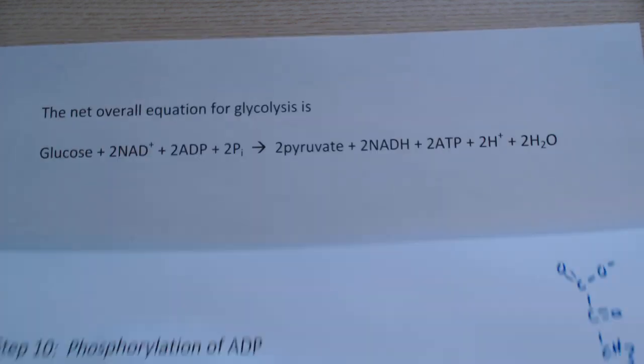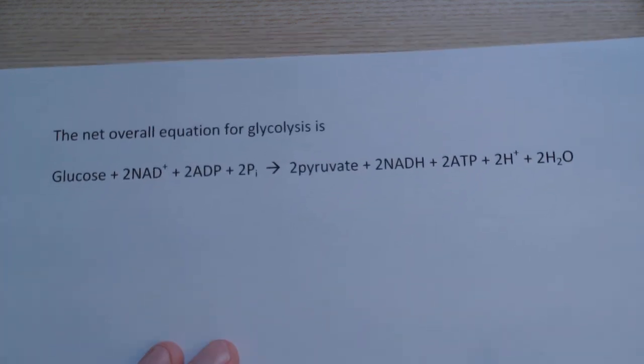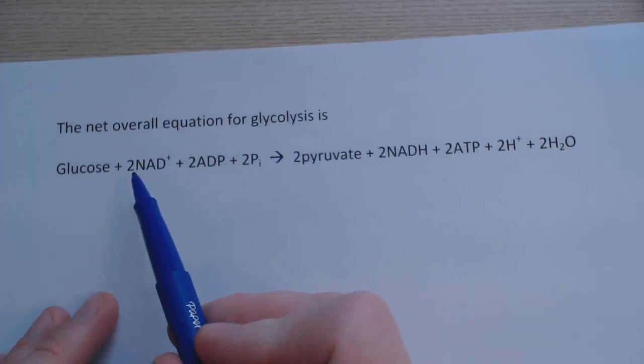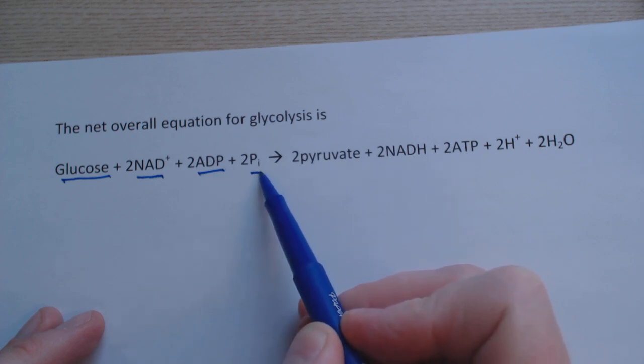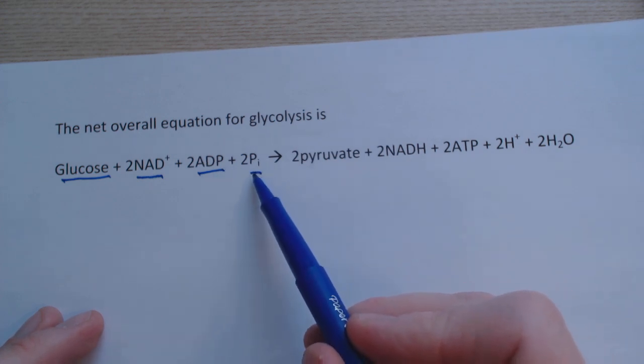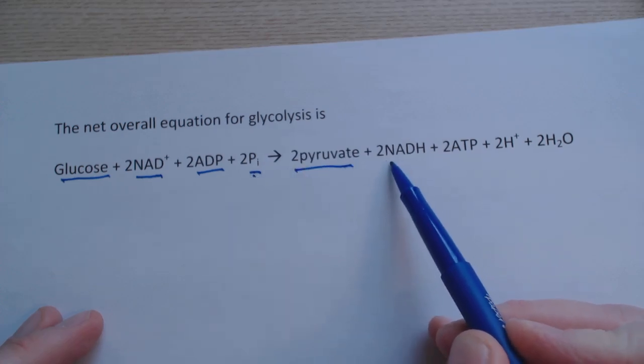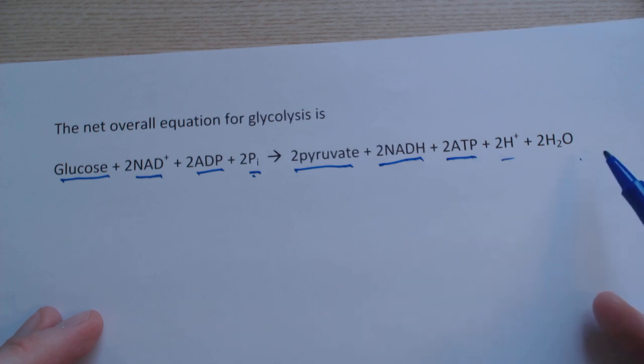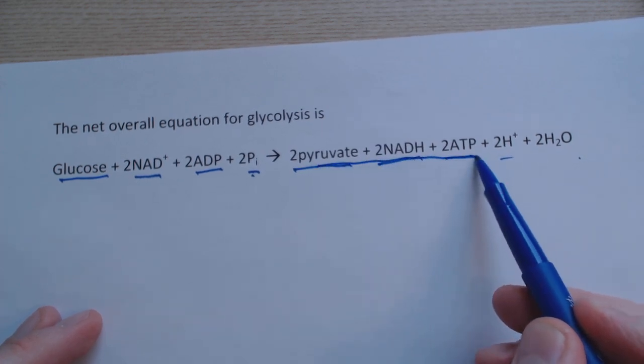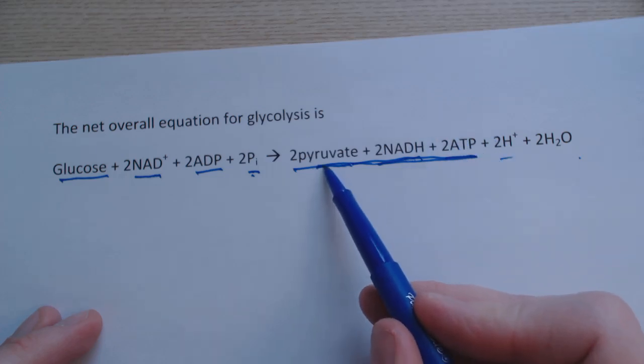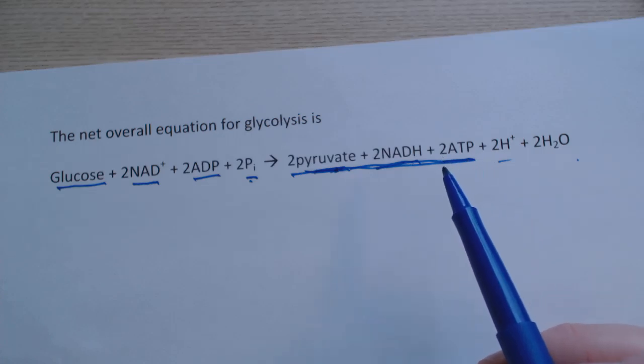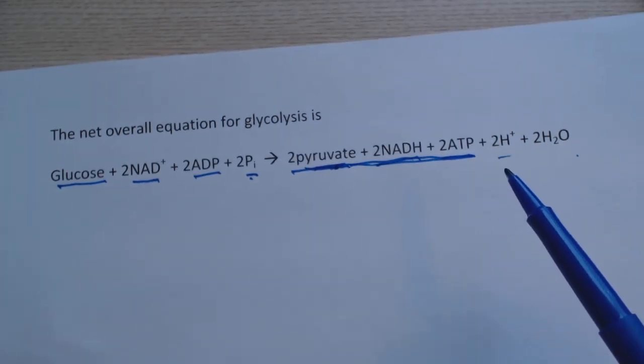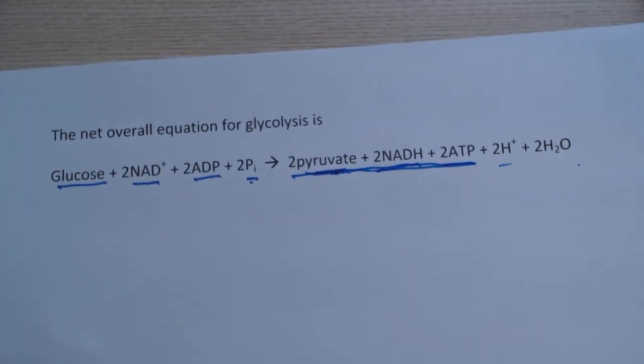Here's the net overall equation for glycolysis: glucose comes in, there's two NAD+, two ADP, and two inorganic phosphate ions. We create our two pyruvate, two NADH, and two ATP, plus H+ and water. These are the main components we're interested in - high energy ATP, the pyruvate in a carbon-3 form that's ready to be used when we talk about the fates of pyruvate, and the NADH as well.